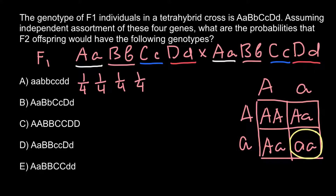When we have independent probabilities, we use the product rule. The probability that a plant would be homozygous recessive for all four genes in the F2 generation is one quarter times one quarter times one quarter times one quarter, which equals one out of 256.